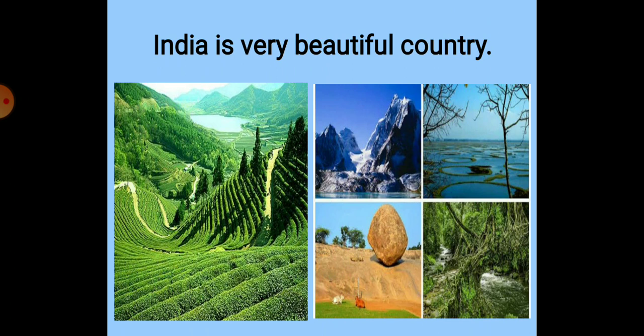You can see here some pictures. These all pictures are from our country. India is one of the most beautiful countries in the world. It has many landforms. Some places have flat land. At some places, the land is made up of rocks. At other places, it is covered with sand. Let us read about these diverse landforms.